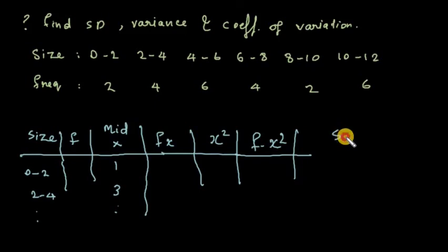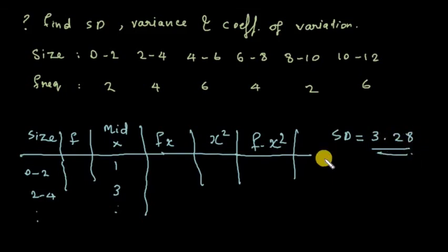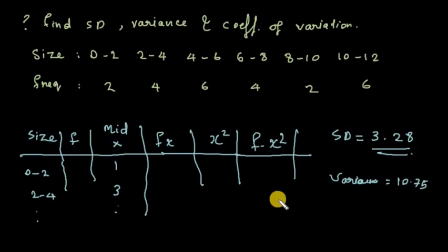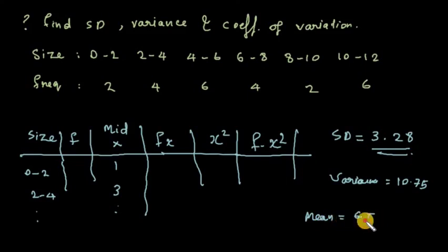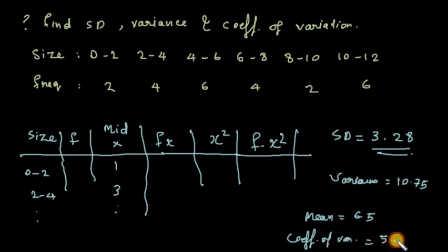The standard deviation works out to 3.28 and variance, being the square of standard deviation, is 10.75. The mean is 6.5, and the coefficient of variation equals standard deviation divided by mean into 100, which gives 50.46. The problem is complete.